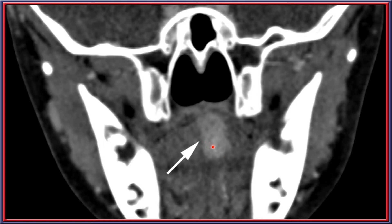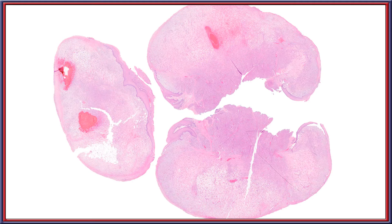This coronal CT demonstrates an enhancing lesion in the midline tongue. On low power of the specimen, you can see areas of surface ulceration with a rich granulation-type tissue present throughout the lesion, although the neoplastic component can be seen through the basal zone of each area.